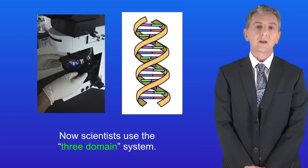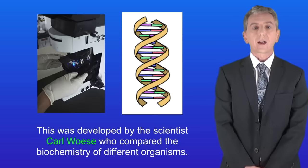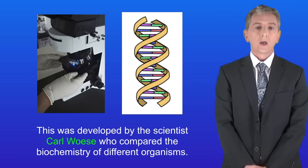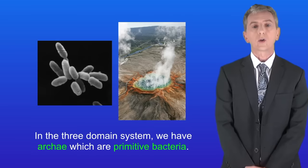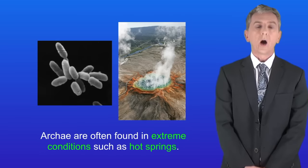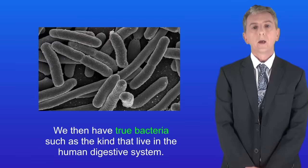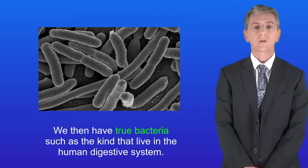Now scientists use the three domain system. This was developed by the scientist Carl Woese who compared the biochemistry of different organisms. In the three domain system we've got archaea which are primitive bacteria. Archaea are often found in extreme conditions such as hot springs. We then have true bacteria such as the kind that live in the human digestive system.